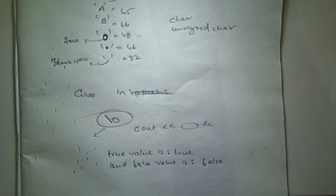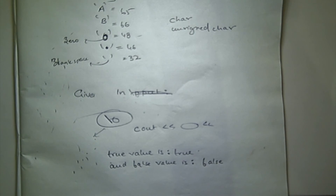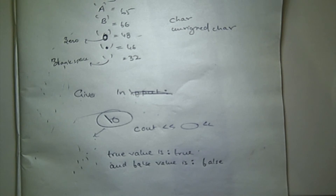One proposed answer is: 'true value is: true' and 'false value is: false' — and many students agree with this. Unfortunately, that is wrong. Some students suggested it would print an integer value for true and 0 for false.